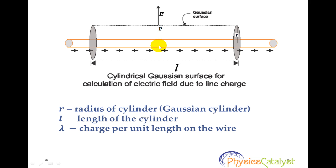Now lambda is charge per unit length on the wire, and as can be seen in this figure, direction of electric field E is perpendicular to the wire. Components of electric field E normal to end faces of cylinder make no contribution to the electric flux.